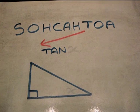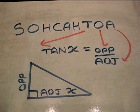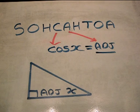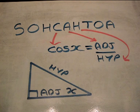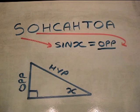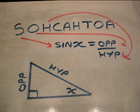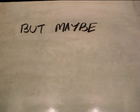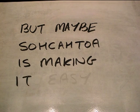Tan of X is opposite over adjacent. Cos of X is adjacent over hypotenuse. Sin of X is opposite over hypotenuse as well. But it seems so hard — but maybe SOH-CAH-TOA is making it easy.